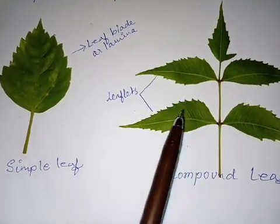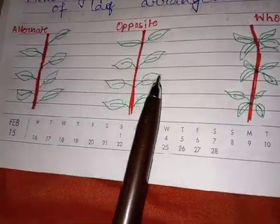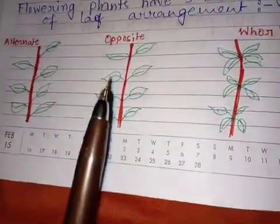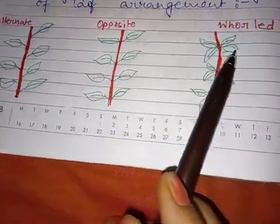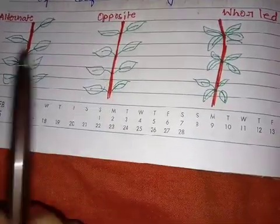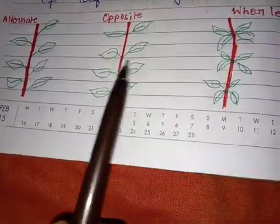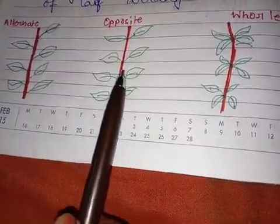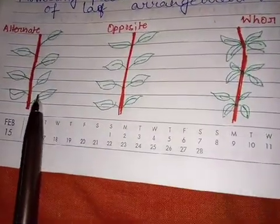Next we come to leaf arrangement. Here we can see there are three different types of leaf arrangement in flowering plants. Leaves are differently arranged on the stem to increase the plant's ability to carry on photosynthesis, by positioning the leaves so as to maximize the leaf surface area to trap maximum sunlight.